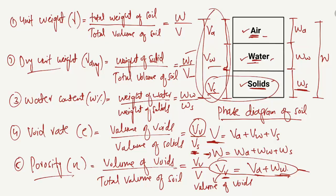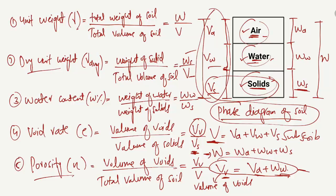So here are the different formulas used to find the different quantities of the soil sample. This phase diagram has different components — air, water, and solids — and these different formulas are used to find the different quantities. Hope you guys understand today's lecture. Don't forget to subscribe to our channel for daily Seven Engineering videos. Thank you for watching.